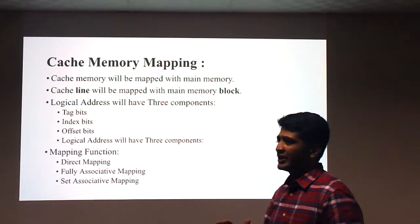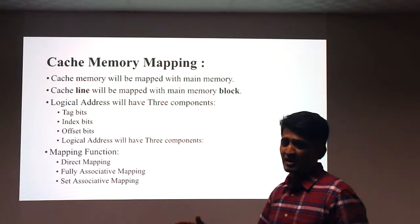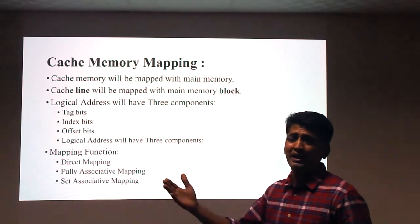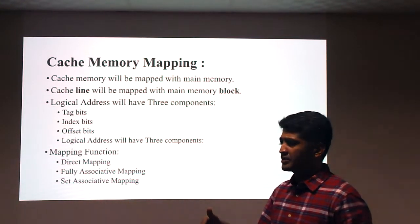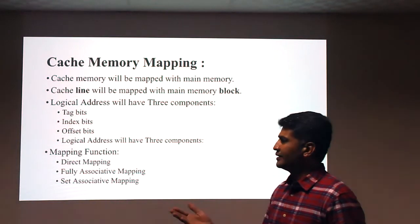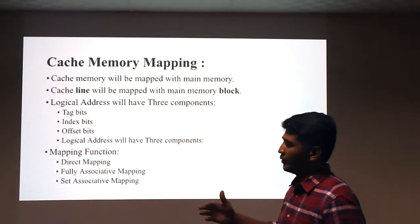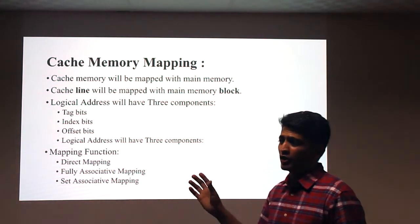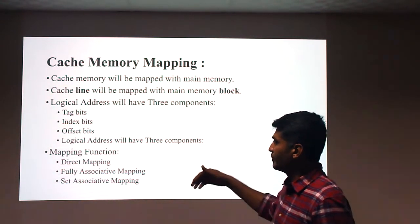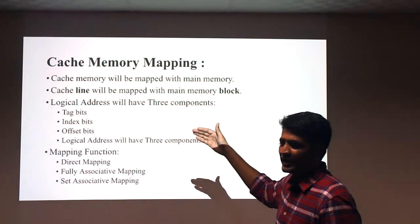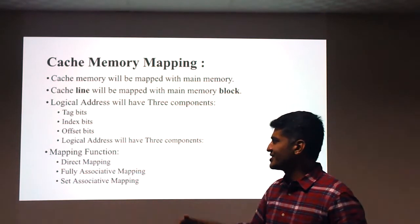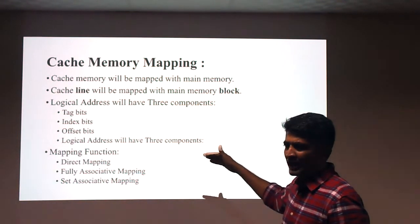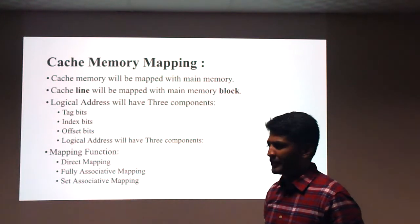In this video we discussed what cache memory is, why it is needed, the cache levels L1, L2, and L3, cache hit and cache miss, thrashing, and how the processor generates a logical address with three components: tag bit, index bit, and offset bit. In the next video, we'll discuss the three mapping functions — direct mapping, fully associative mapping, and set associative mapping — one by one.